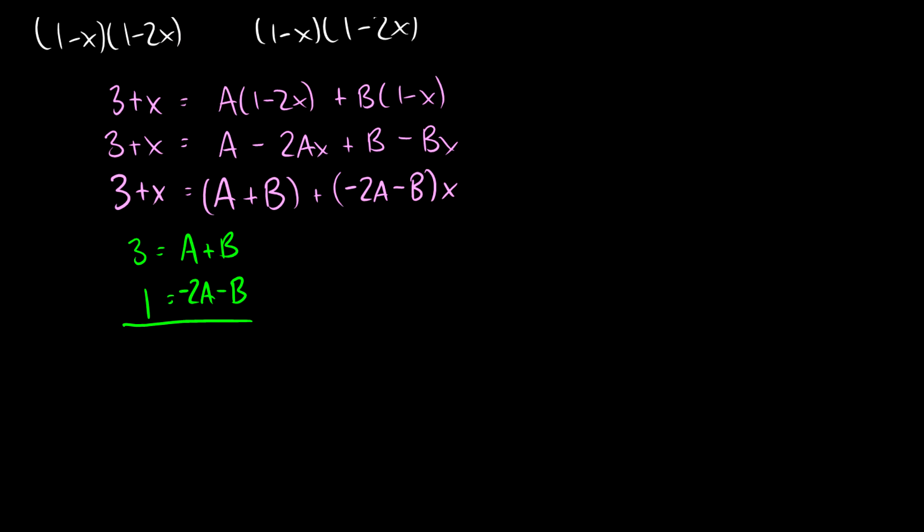We have 3 equals A plus B, 1 equals negative 2A minus B. We can just add the equations together and we're going to get 4 equals negative A. The B's cancel out, that's what we want. So we have A equals negative 4. So now we can figure out B. We can just plug it back in. So we have 3 equals negative 4 plus B. So B must equal 7.